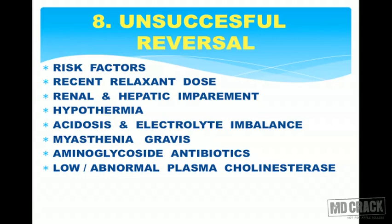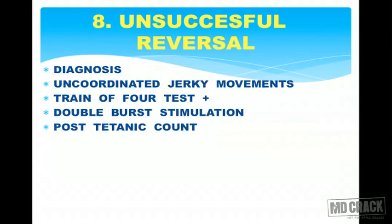Diagnosis of unsuccessful reversal: uncoordinated or jerky movements of the body. Train-of-four test may be positive, double burst stimulation may be present, and post-tetanic count is high. These are the methods to diagnose unsuccessful reversal — important from an MCQ point of view — in a patient who has not reversed despite neostigmine or anticholinesterase drug.